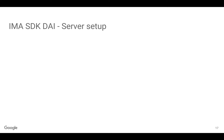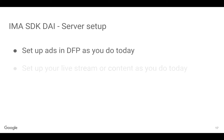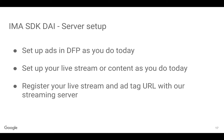So how do we set this up? There's a server component and an application component. On the server side, you're going to set up ads in DFP just like you do today and get an ad tag. You'll set up your live stream or content on your CDN just like you do today and get a URL. Then you're going to go to the Dynamic Ad Insertion front-end and register your live stream and ad tag URL with the streaming server. That's going to give you an asset key, which is your new link to your stream.